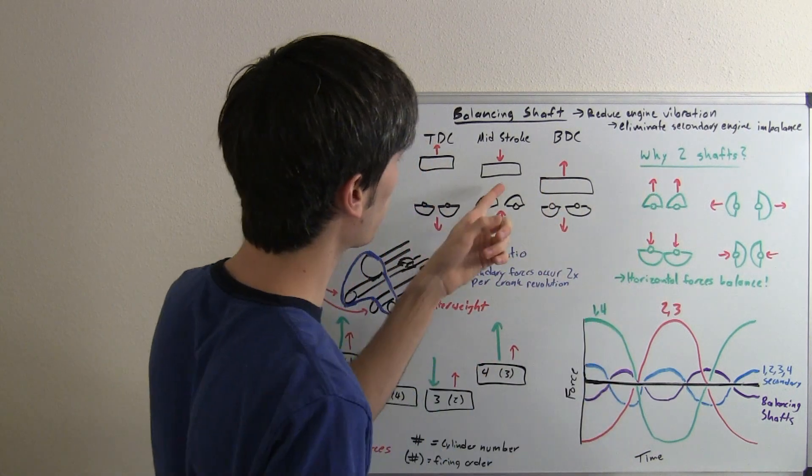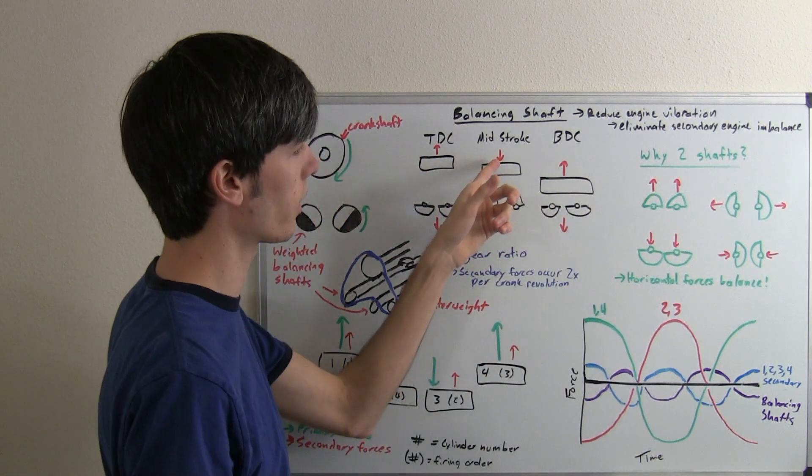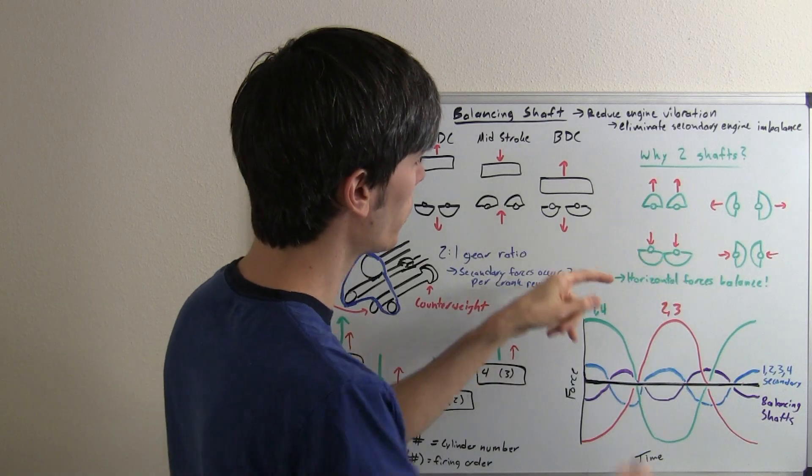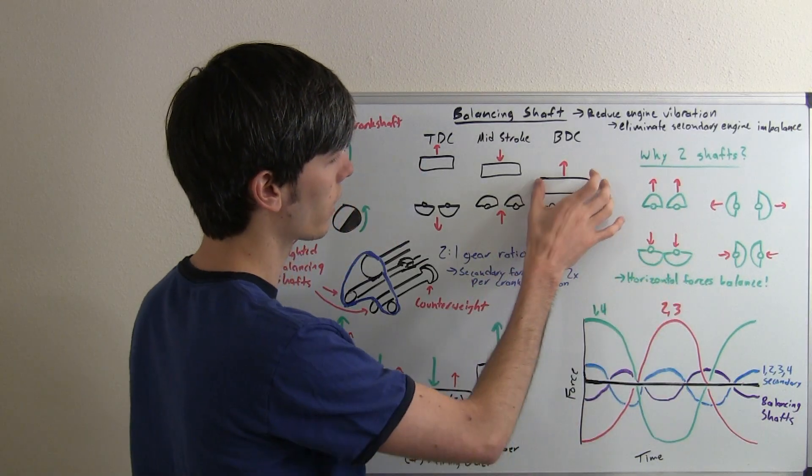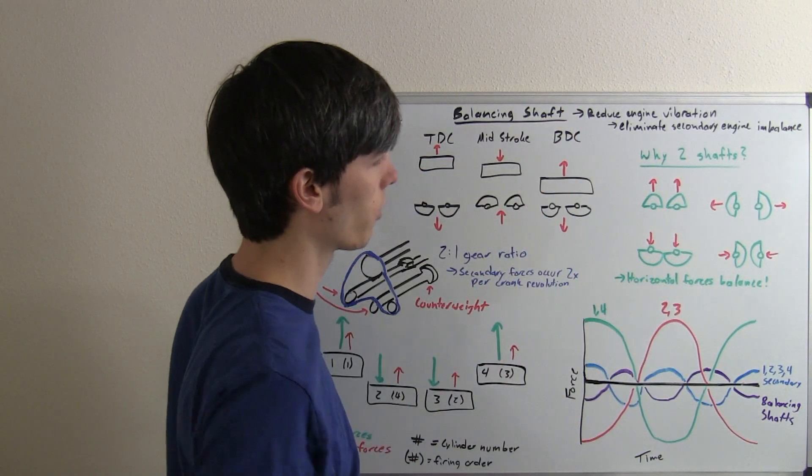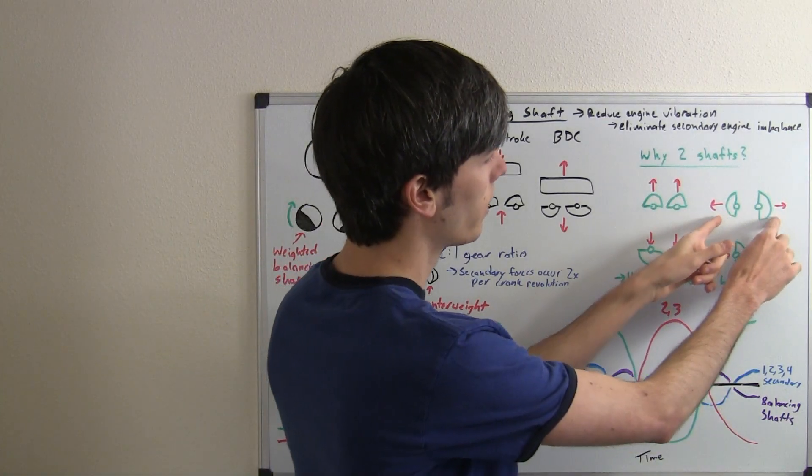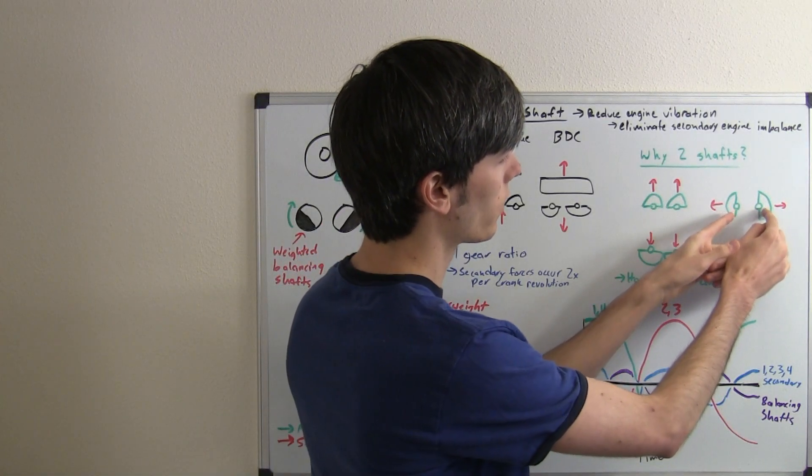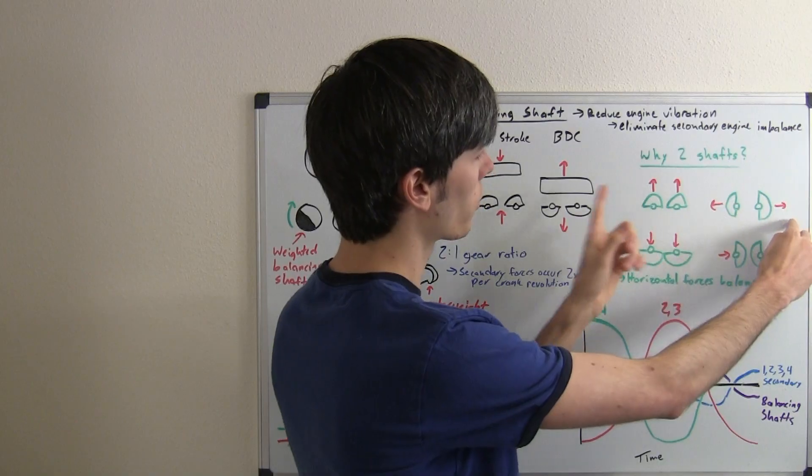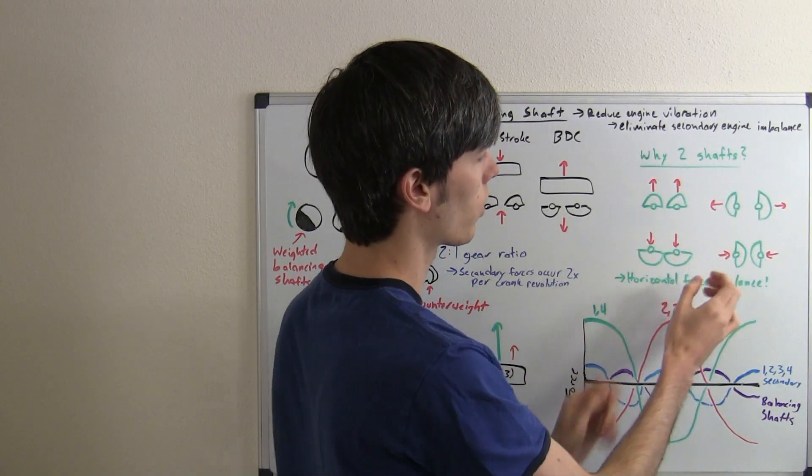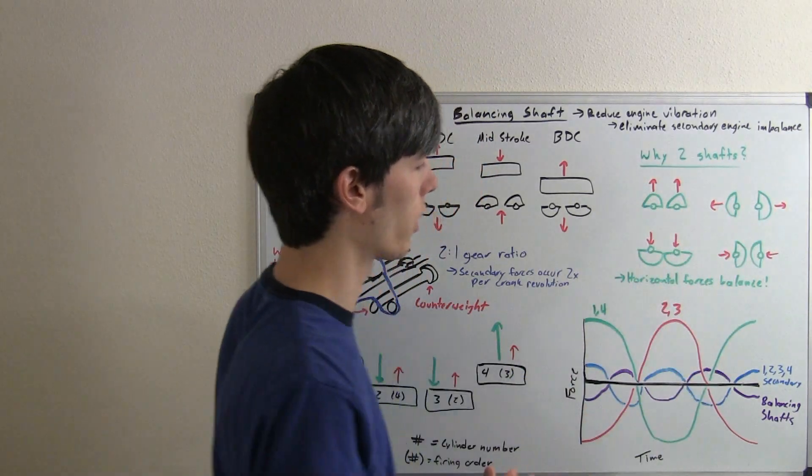when they're both pointing up, you have a net force up that counteracts the negative secondary force. When they're both pointing down, you have a net force down that counteracts a positive secondary force. But when they're moving to the side, they cancel each other out because this shaft will have a force going in one direction and the other in the opposite direction. Whereas if you just had one, you would be vibrating it back and forth.